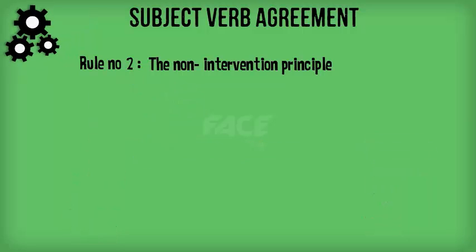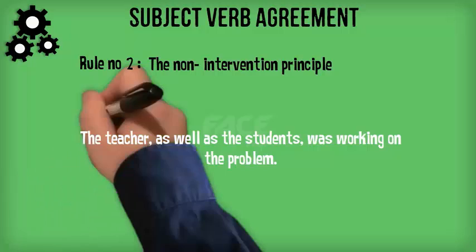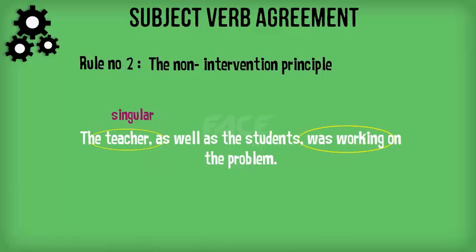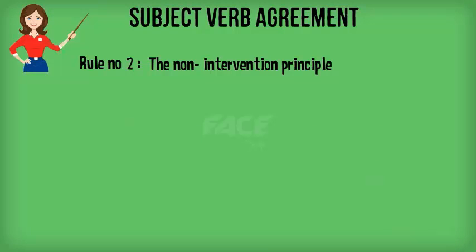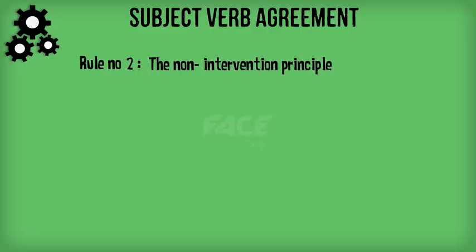Example: 'The teacher as well as the students was working on the problem.' The subject here is 'the teacher,' which is singular. The verb phrase 'was working' is also singular. The prepositional phrase 'as well as the students' does not affect the number of the subject. Other prepositional phrases that function like this are: 'in addition to,' 'together with,' 'along with,' 'accompanied by,' 'except,' and so on.